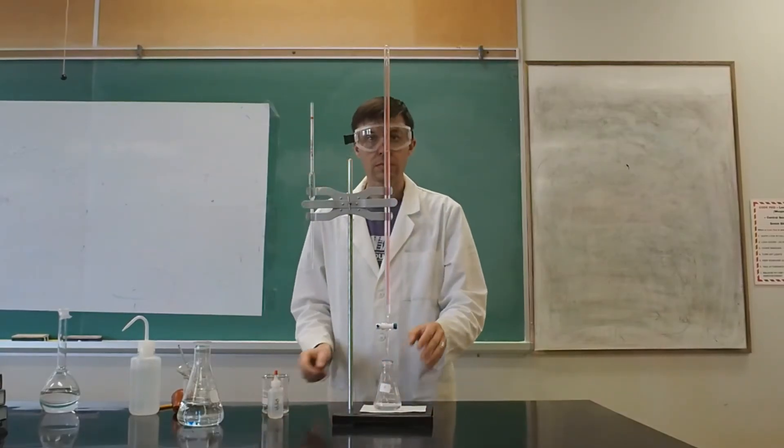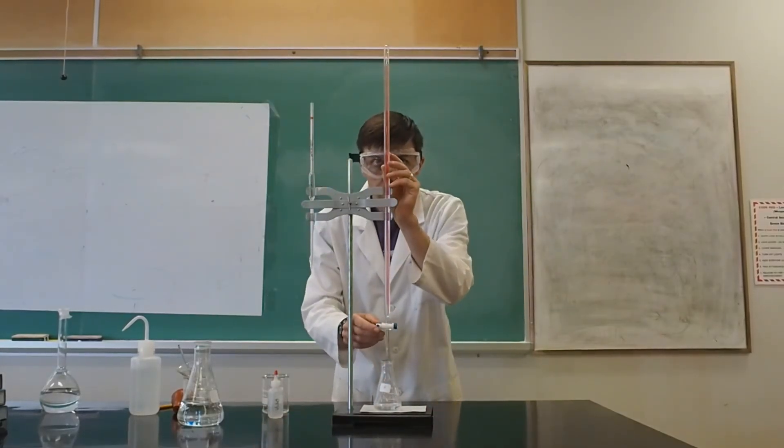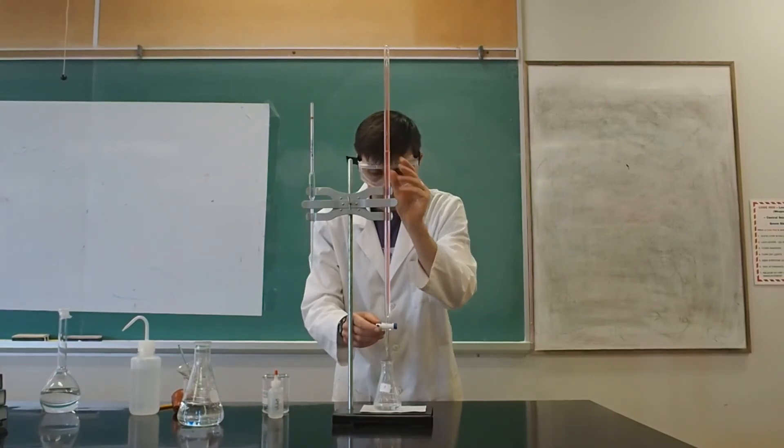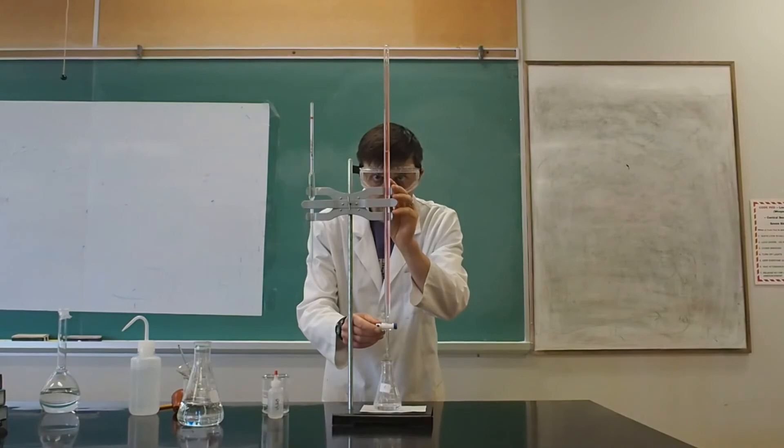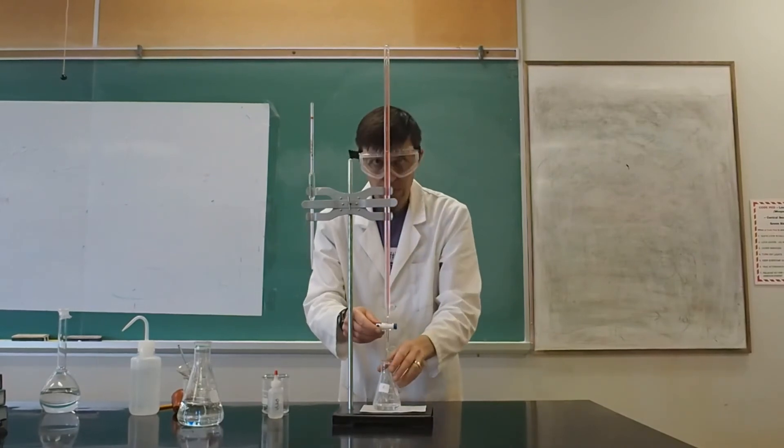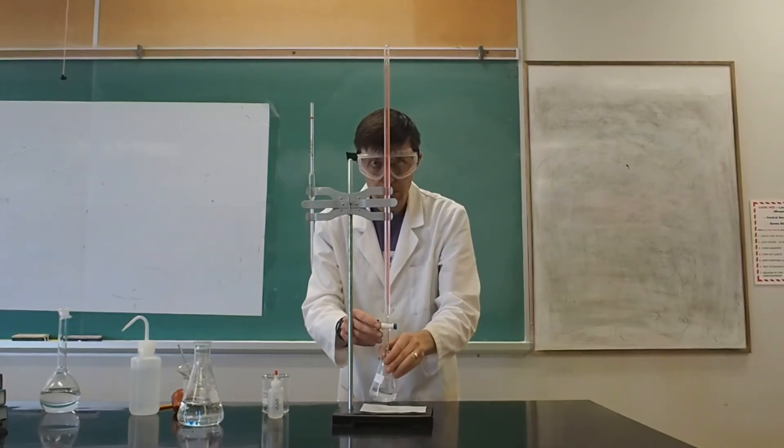Now read the starting volume of the burette. Remember to record a volume in which your final digit is an estimate. For example, on the 50 milliliter burette that's used in this video, there are markers for every 0.1 milliliter.